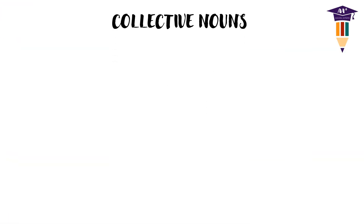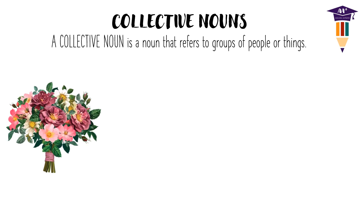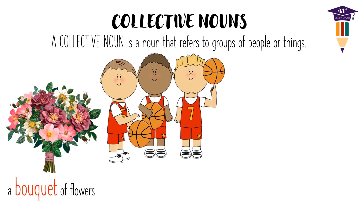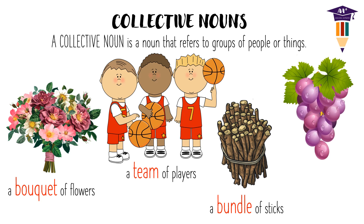Third, collective nouns. A collective noun is a noun that refers to groups of people or things. Examples: when many flowers are neatly arranged together they are called a bouquet; when a group of players come together they are better known as a team; when sticks are tied together they become a bundle; another common example is a bunch of grapes. Here bouquet, team, bundle, and bunch are examples of collective nouns.